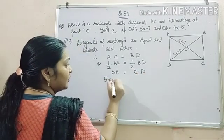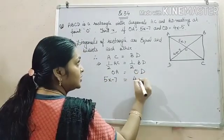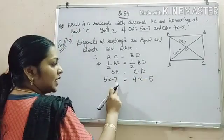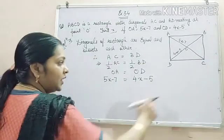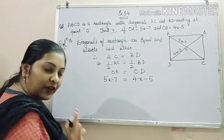And values are given to you for these two lengths. 5x minus 7 is equal to 4x minus 5. What we did over here? We substitute the values.